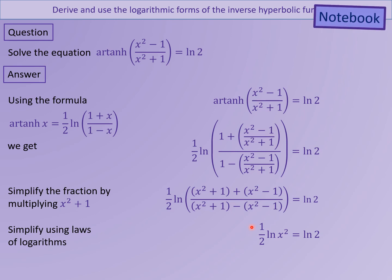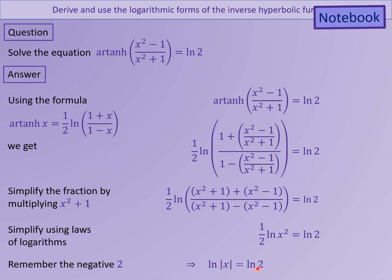We can now use the laws of logarithms. The half at the front of the log can become a power, so we get ln of x squared to the power of one half. Remember that a power of one half means the square root. Be careful — when you square a number and then take the square root, there could be a positive or negative answer. So we end up with ln of the absolute value of x equals ln 2, giving x equals plus or minus 2. Both positive 2 and negative 2 are valid — substituting them into the original equation gives ln 2 in both cases. So plus and minus 2 are the two answers.